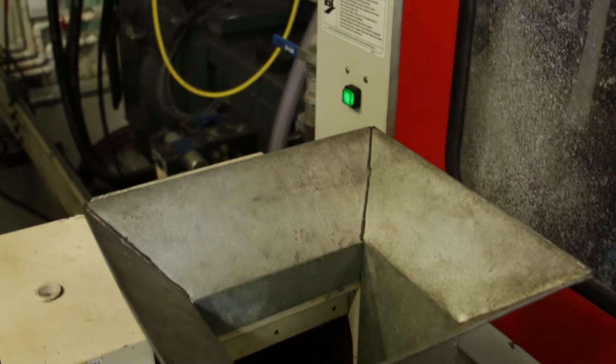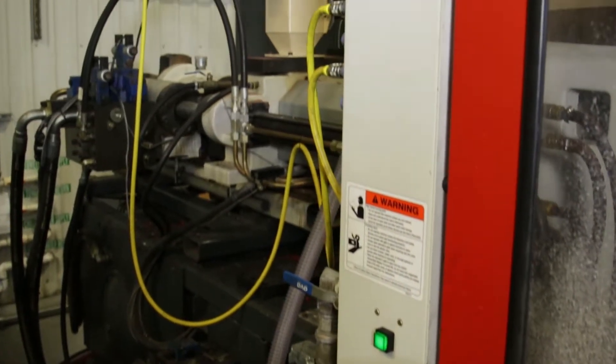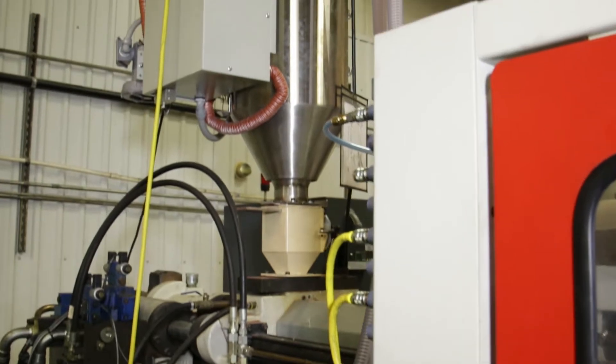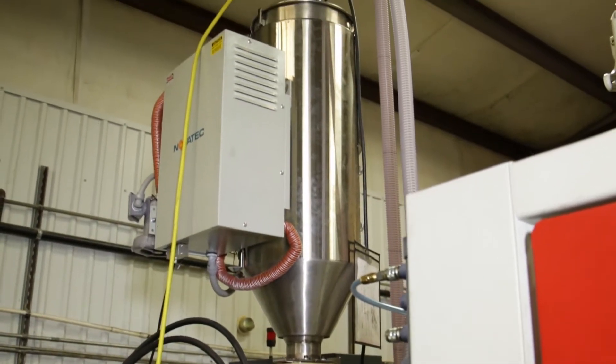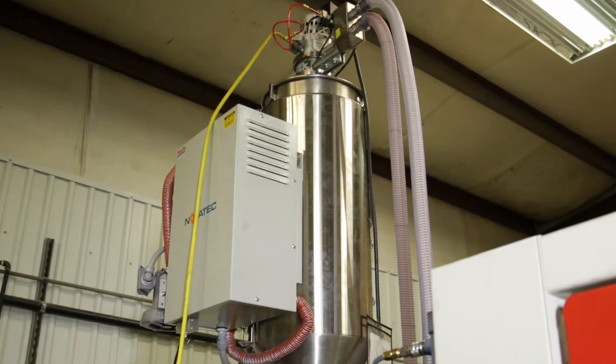Material grinders can also be located at the machine to grind sprues and use proportional blenders to return regrind back to the molding machine at specific blends.